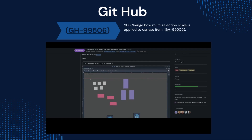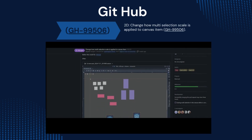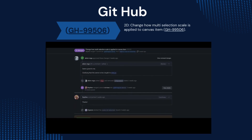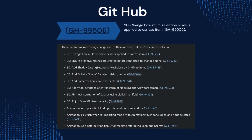For example, if you're reading a Godot changelog or dev blog and you see something like GH-99506, it's basically a shorthand that points you to the exact discussion or contribution related to that change — in this case under the 2D section, following the discussion on how multi-section scale applies to canvas items. You can look it up on GitHub by going to the Godot engine repository and using the number to find the related issue or pull request. It's a neat way to keep track of what's happening under the hood, and super useful for developers who want to follow the progress of a specific change or report bugs.